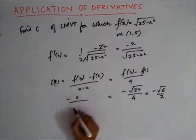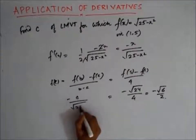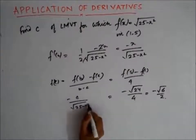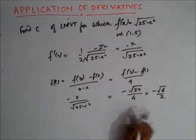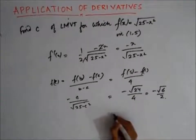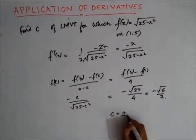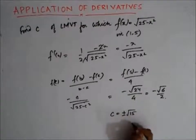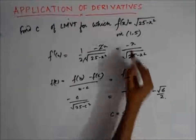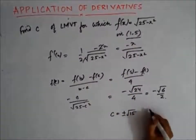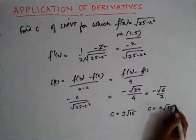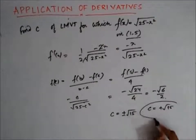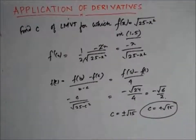So f'(c) equals c divided by c², and if you square both sides, you get a quadratic. Solving this quadratic, you get the value of c as plus or minus √15. Now, in the interval [1, 5], √15 lies. So my value of c for which LMVT is satisfied is c equals √15.